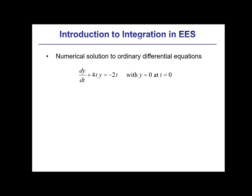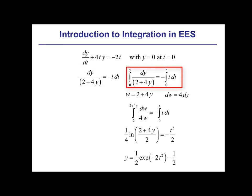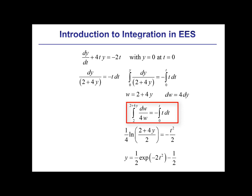The analytical solution is obtained by separating the equation, so we separate it so that the y terms are on the left and the time terms are on the right. Then we need to integrate from time equals zero, where y equals zero, to an arbitrary time and an arbitrary y. This integration is made easier by defining the variable w and the differential dw, and we'll substitute w and dw into the integral, which is pretty easy to integrate. We carry out the integration and here we have an implicit solution for y as a function of time.